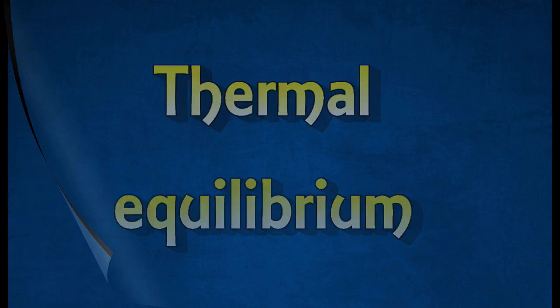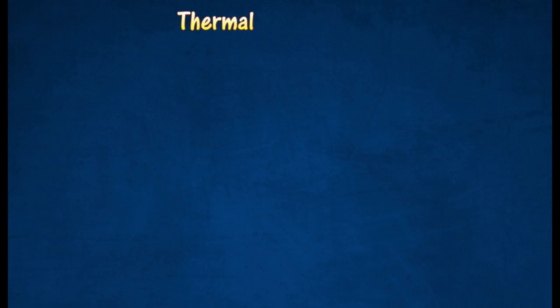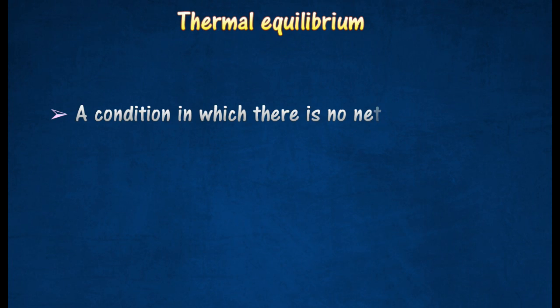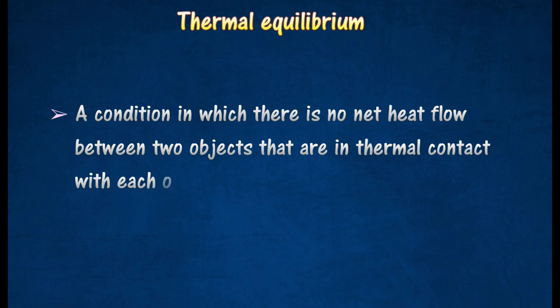Thermal equilibrium occurs when two objects in thermal contact reach the same temperature and no net heat transfers between them. The higher temperature object will transfer heat to the object with lower temperature.